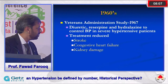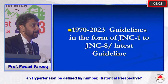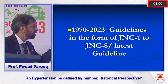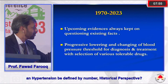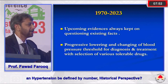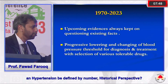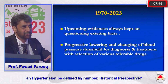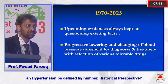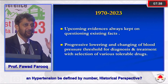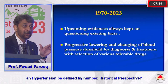Studies like Framingham confirmed that hypertension needed to be treated. From the 1970s through to today, emerging evidence has continuously questioned existing thresholds. We are progressively lowering — and sometimes raising back — treatment thresholds, and remain unclear about when to treat, where to treat, and which patients need treatment at which stage.